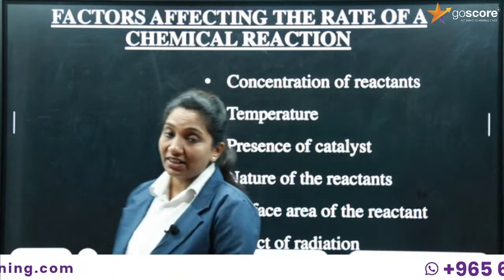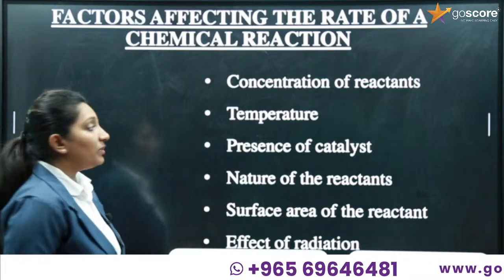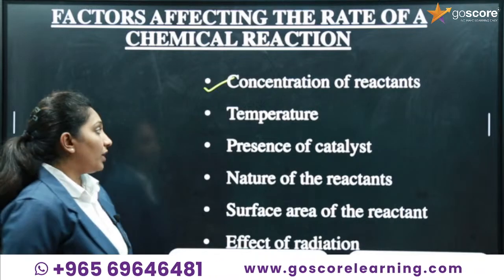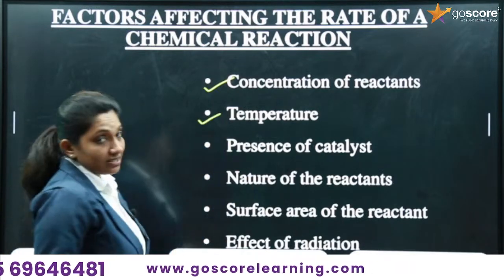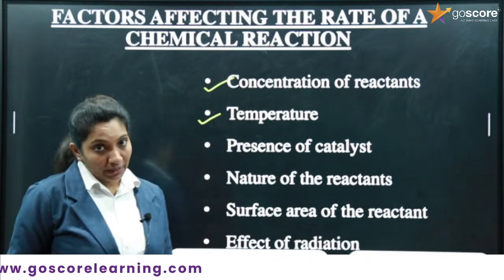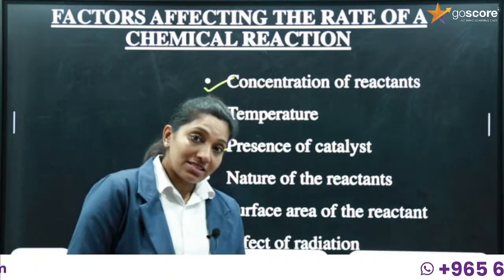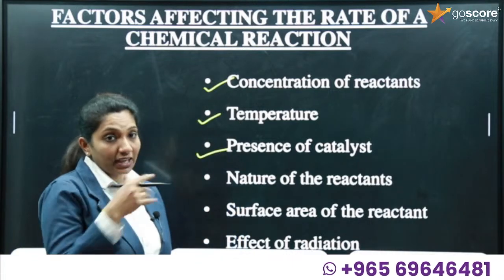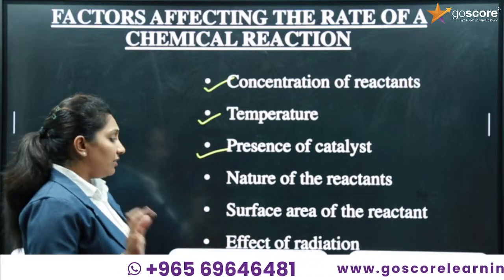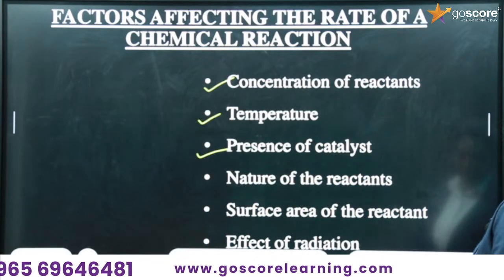Factors that affect the speed of a chemical reaction: increasing the concentration of reactant increases the rate; increasing temperature increases the rate; the presence of a catalyst increases the rate of reaction. Other factors include the nature of reactant, surface area, and the effect of radiation.